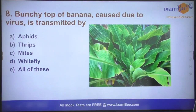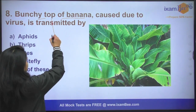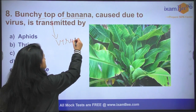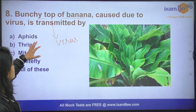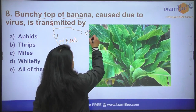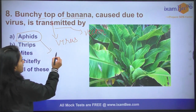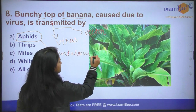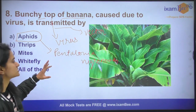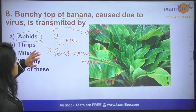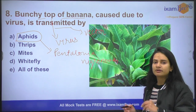Question number eight: Bunchy top of banana is caused by bunchy top virus, which is a viral disease. The vector that transmits this virus is an aphid named Pentalonia nigronervosa. So the disease is caused by a virus, but the aphid is the vector that spreads it.